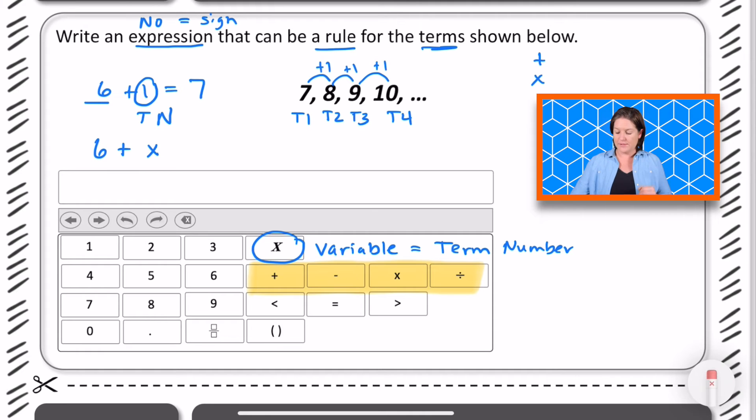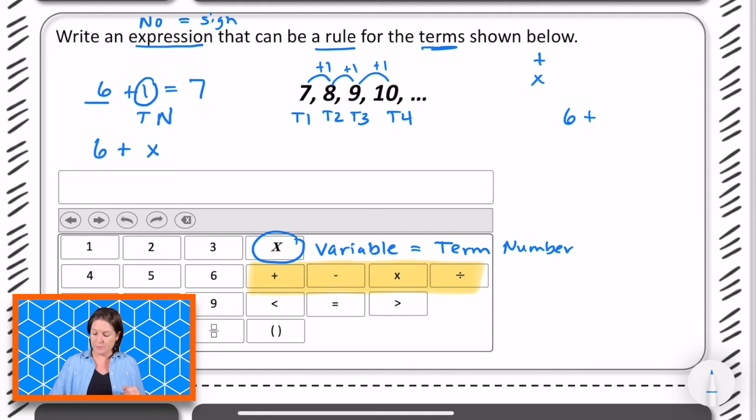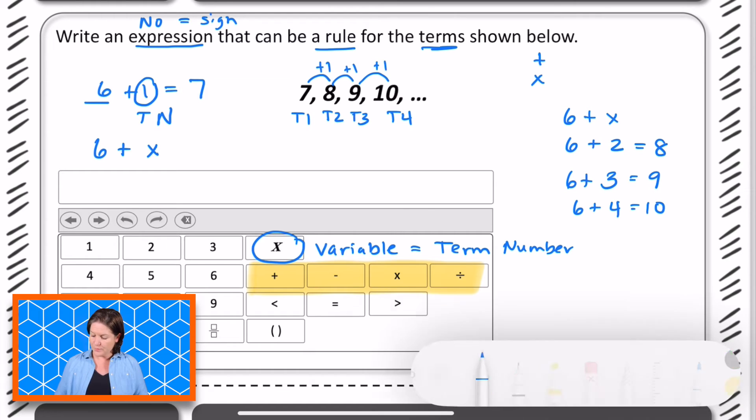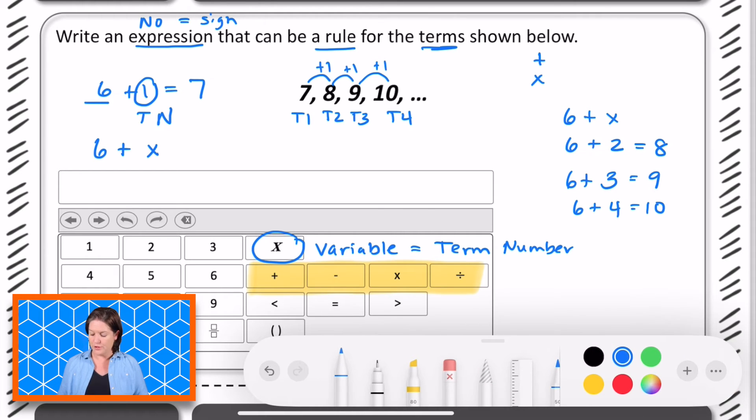Okay, and let's see if that makes sense. If we use this rule, six plus x, if we plug in the term number two, not the number eight, but the term two, then that would get us eight. Or if we plug in six plus the third term equals nine. And look at that, our third term is nine. Six plus four, or the fourth term would be 10. So six plus x would be a wonderful expression to use for this.